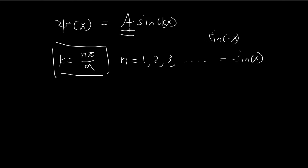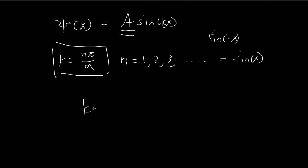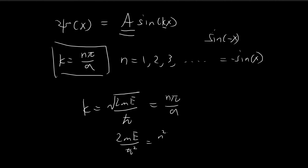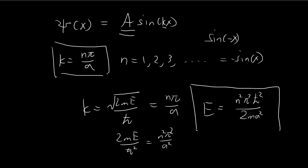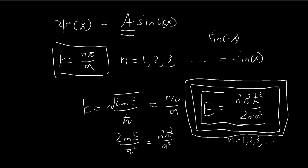We've actually found something very important. Since k = √(2mE)/h-bar and also k = nπ/a, squaring both sides and rearranging gives the energy eigenvalues: E_n = n² π² h-bar² / (2m a²), for n = 1, 2, 3, ... to infinity. These are all the possible energy states of the particle inside the infinite square well — a key result we derived from the boundary conditions.